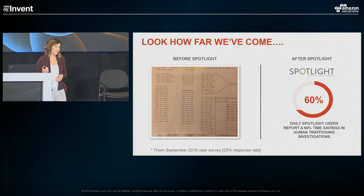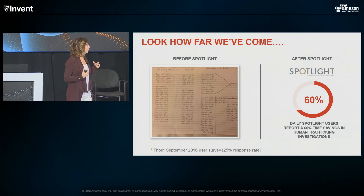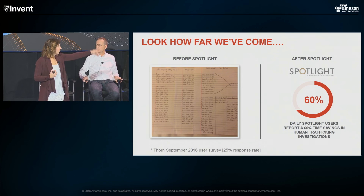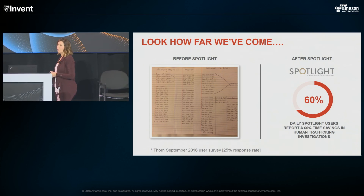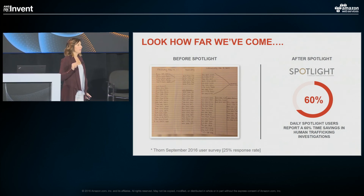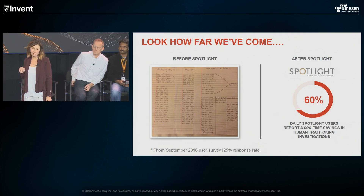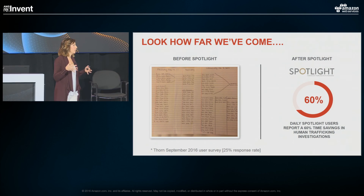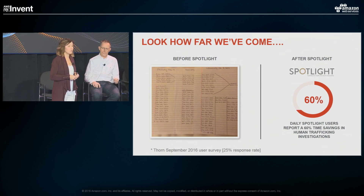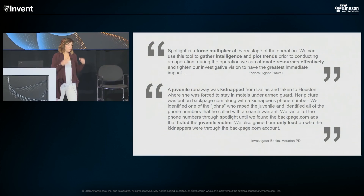Looking at the technical approach, if you look at what investigators were using beforehand — there are date columns, phone numbers, and arrows — this is literally an investigator going on Backpage and writing down things they think might be related. This is not how you can tackle this problem at scale. Based on our survey, for law enforcement coming in on a daily basis, they're saving 60% of their investigation time because we can show them the relationships in the data.